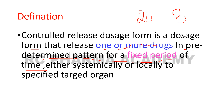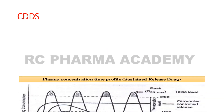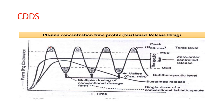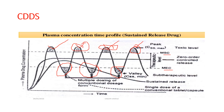In a controlled drug delivery system compared to conventional dosage forms, the drug is released above the minimum effective concentration and below the minimum toxic concentration. This differentiates sustained release from controlled release systems.